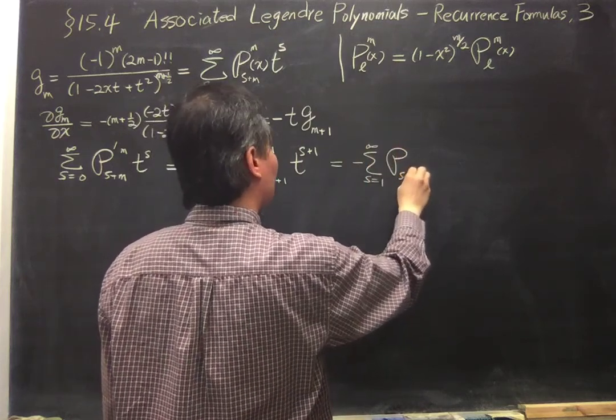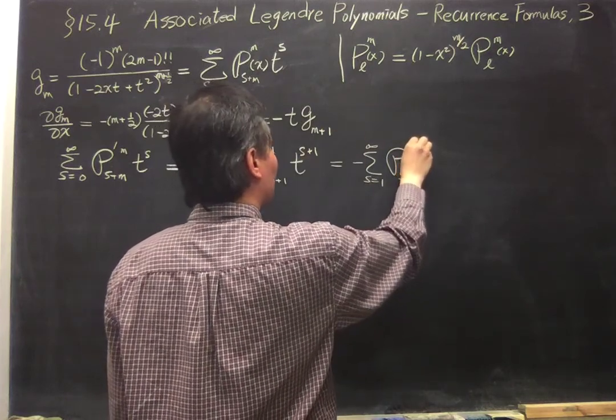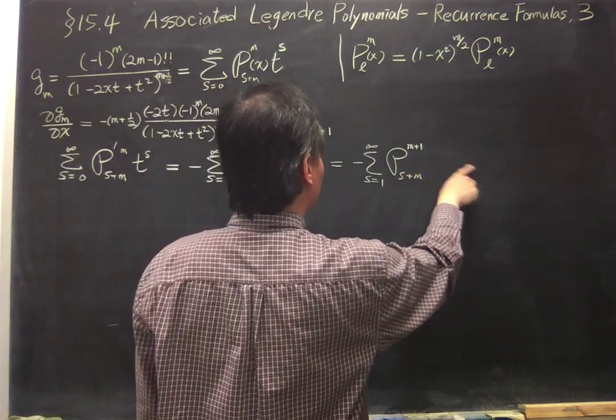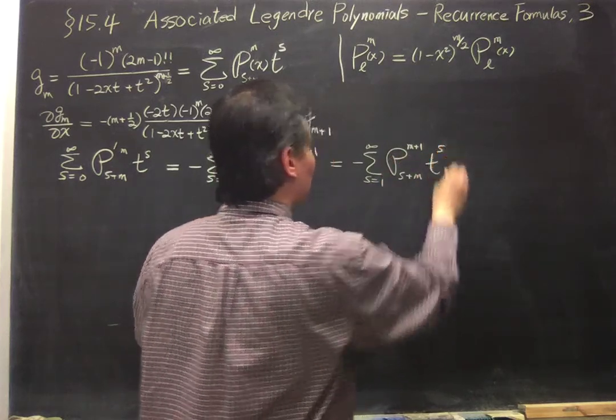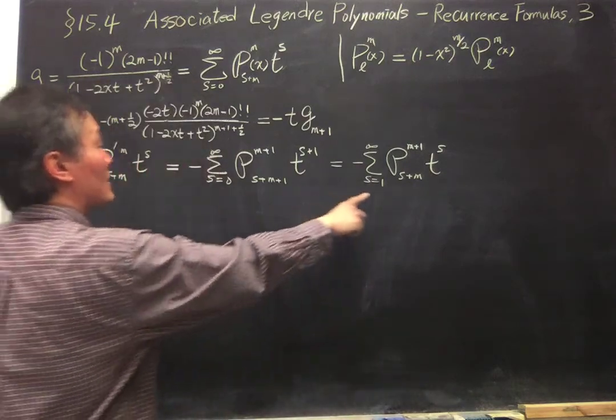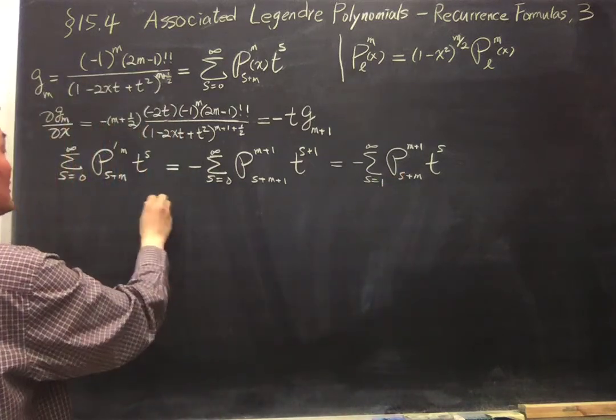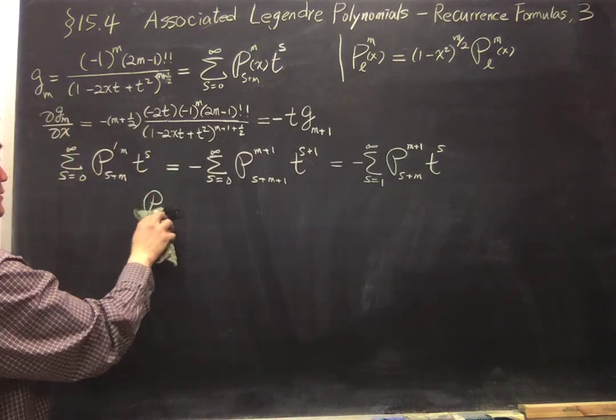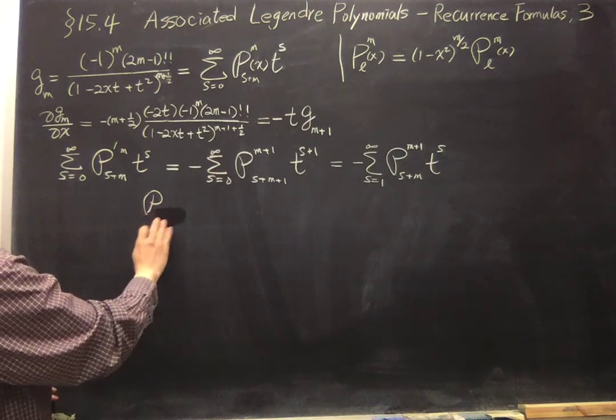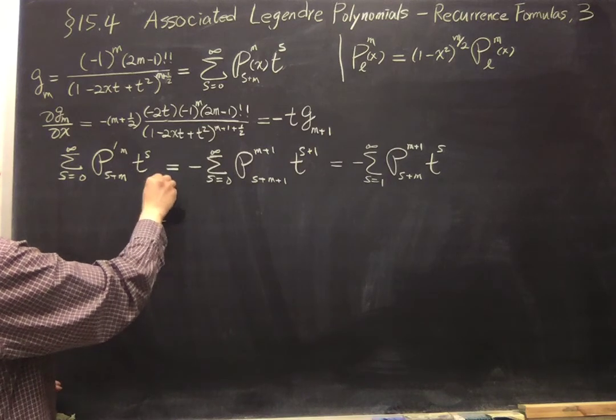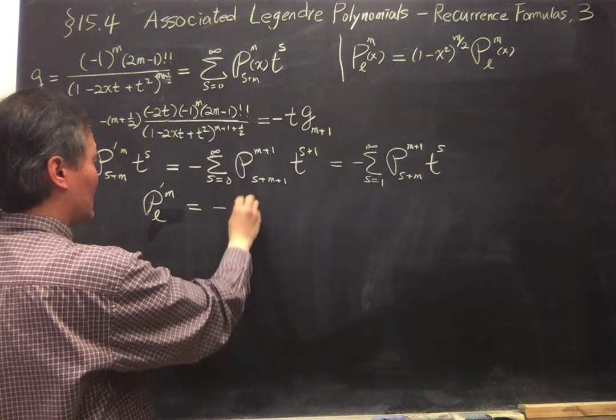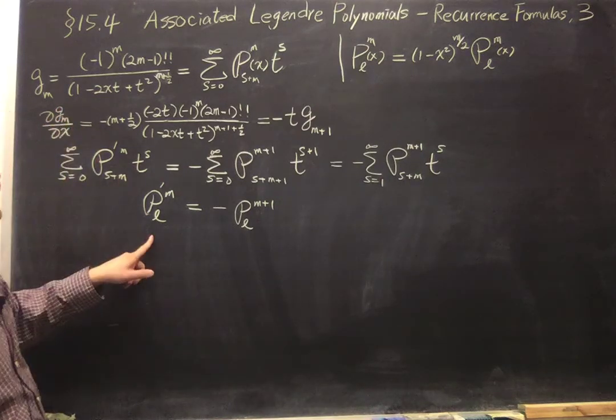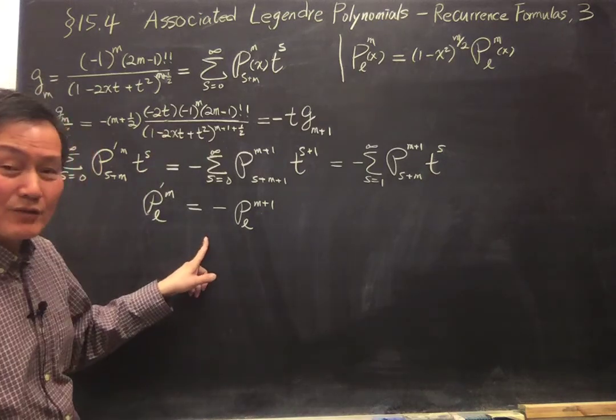This is P_{s+m}, this is m+1, and this is t to the s. So if you equate the same factor in front of t_s, which means P_{s+m}. Now we can do the same trick or same substitution, s+m is our l. So that is what we finally get after this variation.